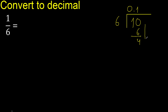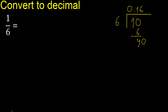Next, there is no more number, so complete with 0. The point is here — 0.40. 6 multiplied by 7 is greater. 6 multiplied by 6 is 36. Subtract — remainder is 4. Complete.